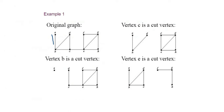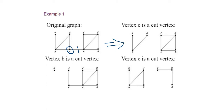Here is an example where we have an original graph where everything is connected — connections from A to B, B to C, and so on. When we remove a vertex, it becomes disconnected. For example, if I remove vertex C, it leads to a disconnected result: the edges D–C and B–C are gone. So this is the disconnected graph — this is what is meant by a cut vertex, you are cutting the vertex.